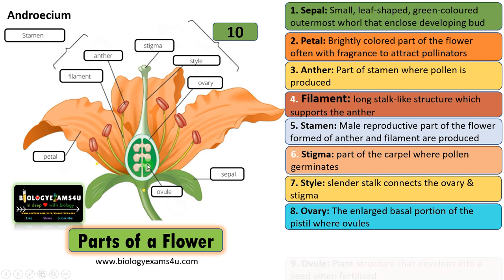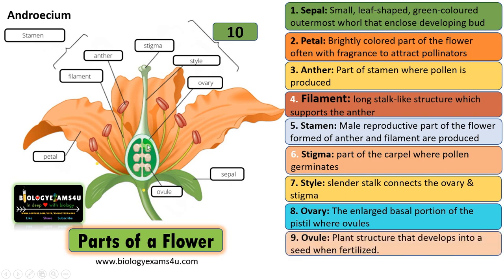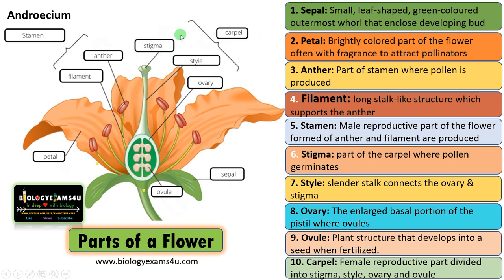This is the ovule — the plant structure that develops into a seed after fertilization. The female reproductive part divided into stigma, style, and ovule is called the carpel, and it is often called the pistil also. Gynoecium is the innermost whorl, or the fourth whorl, of a flower. The unit of gynoecium is called the carpel.